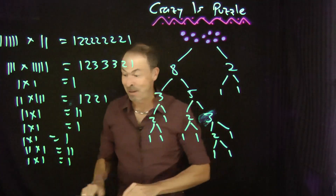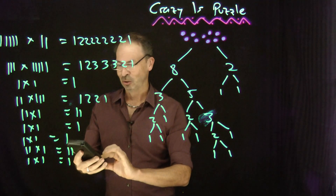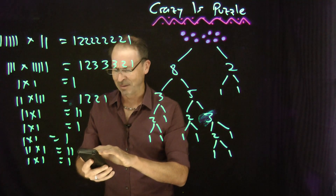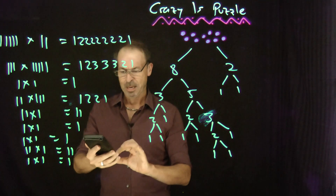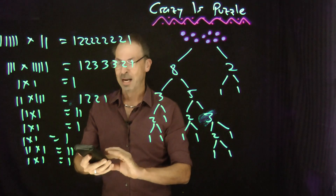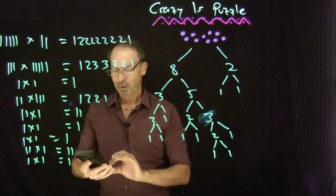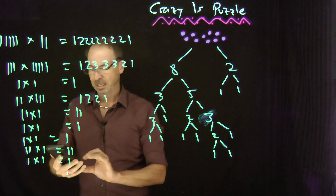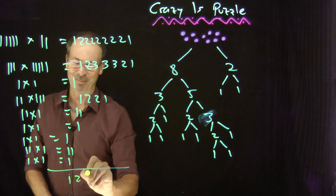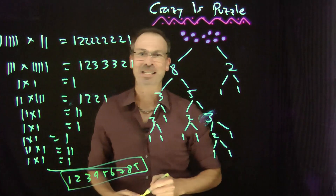Hopefully my guesses of patterns of how these things multiply are correct, because now I'm going to add them up and see if we get that magic number. Let's go for it. So: 1222222221, plus 1233321, plus 1, plus 1221, plus 13, plus 12. Is 123456789. Oh my goodness — 123456789. It's that magic number again!